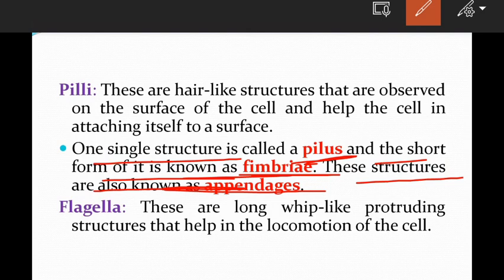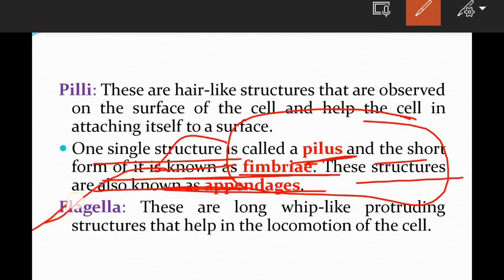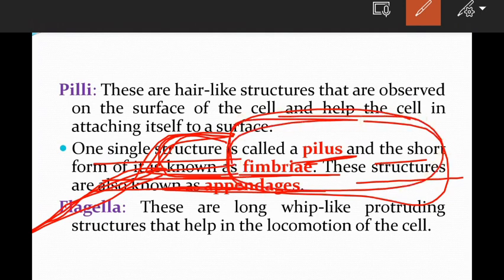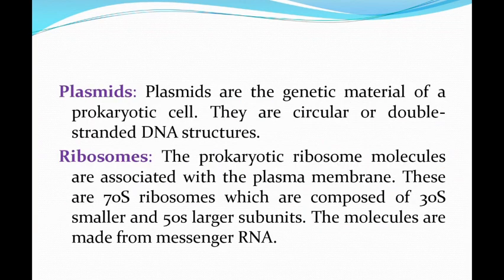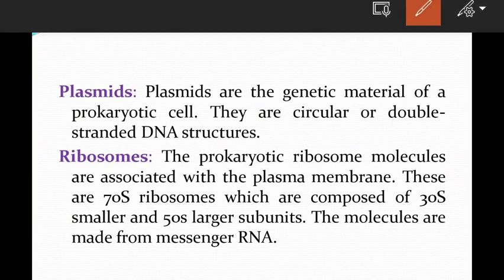Coming to flagella — these are long whip-like protruding structures that help in the locomotion of the cell. And then plasmids: plasmids are the genetic material of prokaryotic cells. They are either circular or double-stranded DNA structures — very important, just remember plasmids.